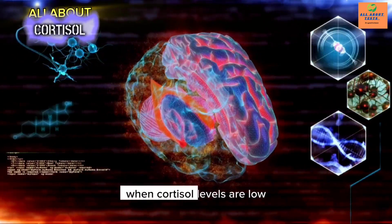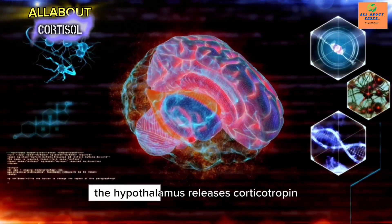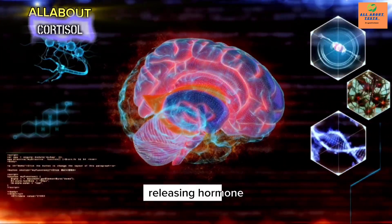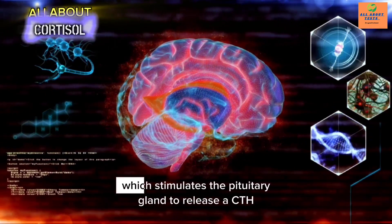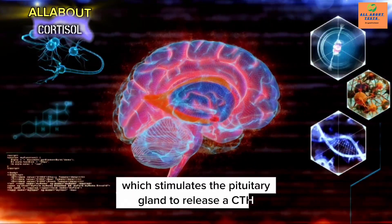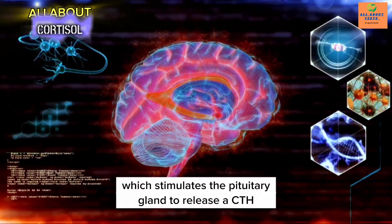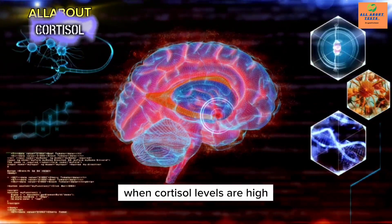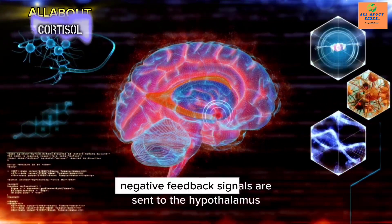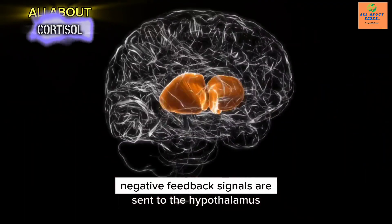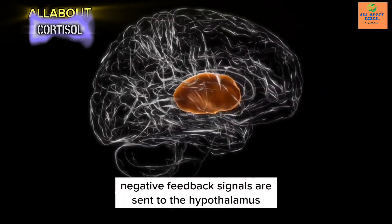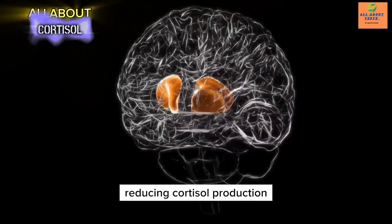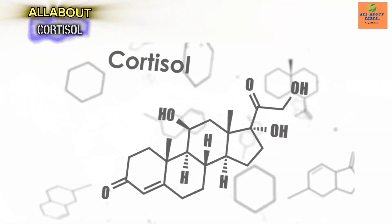When cortisol levels are low, the hypothalamus releases corticotropin-releasing hormone, which stimulates the pituitary gland to release ACTH. When cortisol levels are high, negative feedback signals are sent to the hypothalamus and pituitary gland, reducing cortisol production.